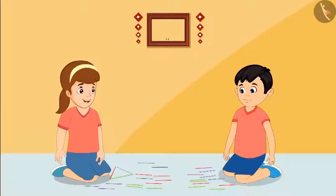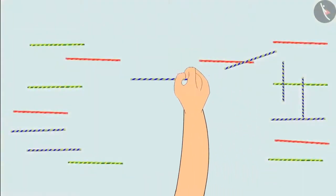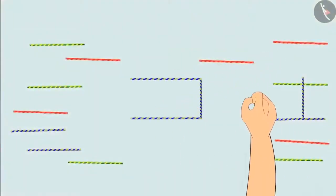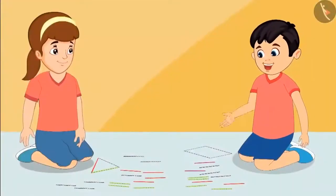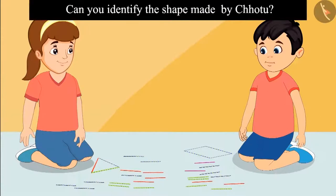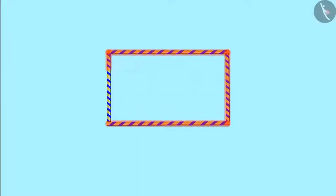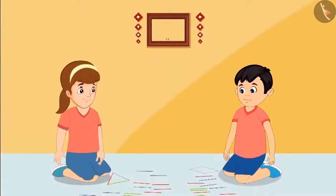Yes Chotu, you are right. Neha, now let me try — you tell me what I have made. I made the shape with four straws — so tell me, what is this shape? Children, do you know which shape this is? It is made of four straws, this means it is a rectangle. Yes Neha, you are right. Now I will also make a rectangle. Neha, use four equal length straws to make a rectangle. Children, do you remember what we call this shape? Neha, we call this shape a square.